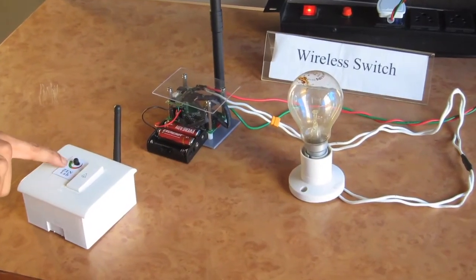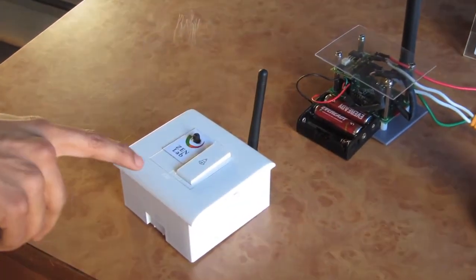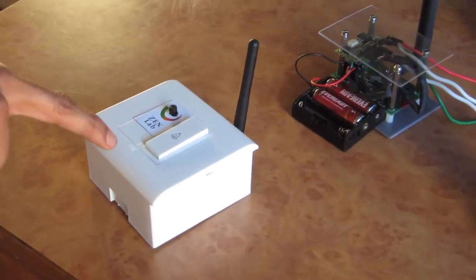This is the transmitter. Here the potentiometer is used as a knob to control the intensity of the light. The energy from pressing the switch is then transmitted.